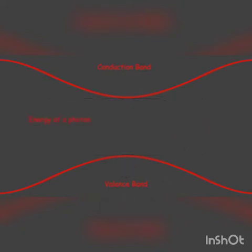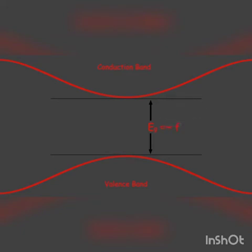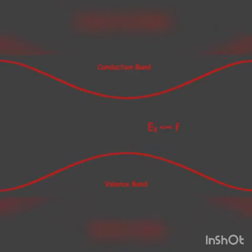We know that the energy of a photon is nothing but the product of the frequency of electromagnetic radiation and Planck's constant. Consider the energy gap is EG. Hence, EG equals HF, where H is Planck's constant and F is the frequency of electromagnetic radiation. EG is proportional to F, so if we adjust this band gap EG, we can produce electromagnetic waves whose frequency will be in our visual range. This is what we do in a light emitting diode.